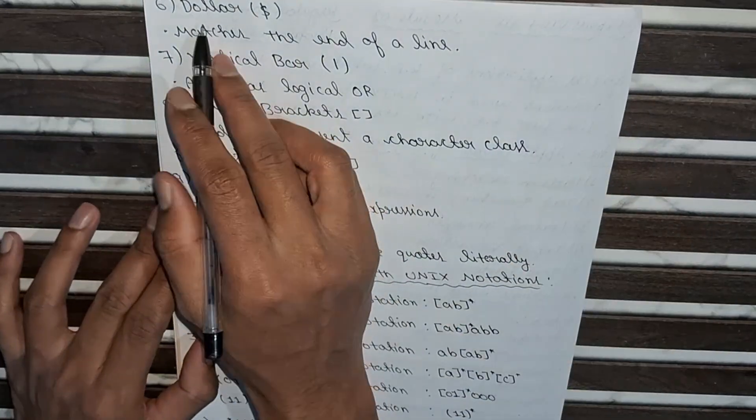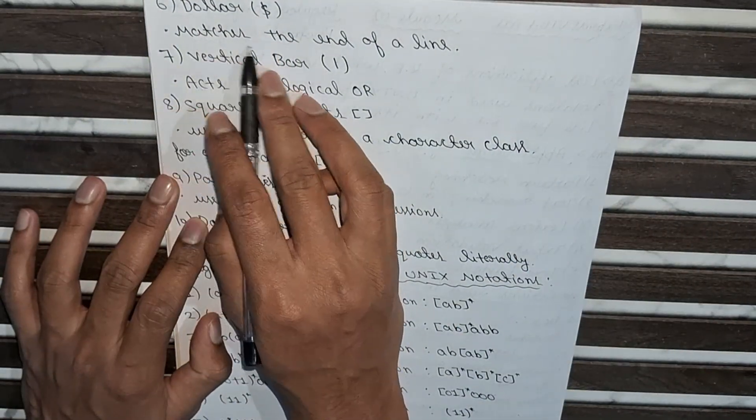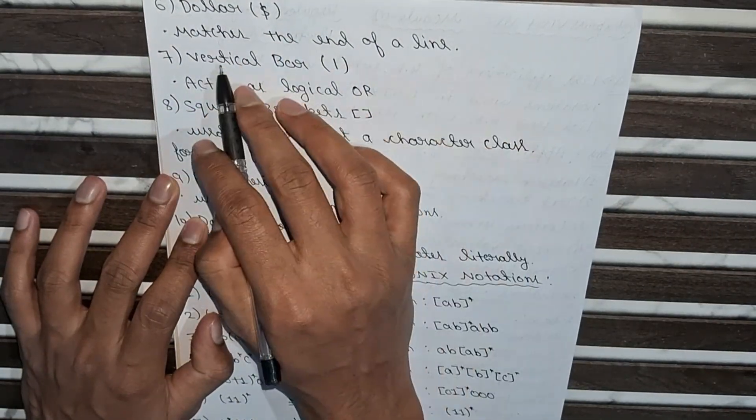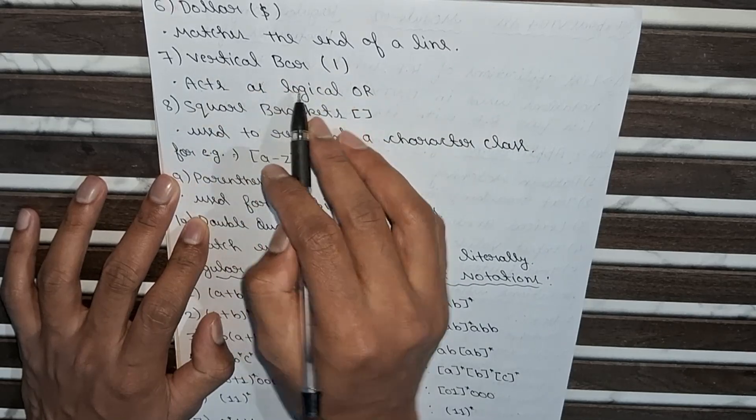And the sixth one is dollar, it is used for matches the end of a line. And seventh is vertical bar, acts as a logical OR.